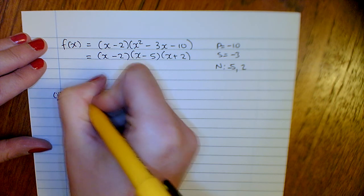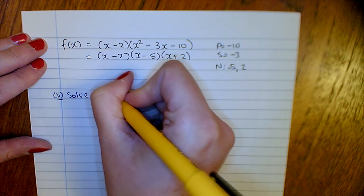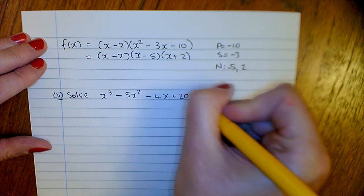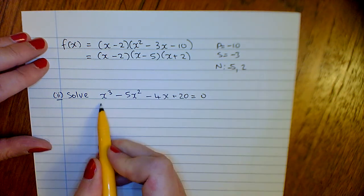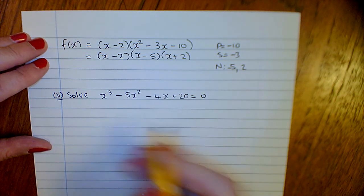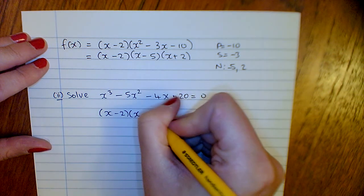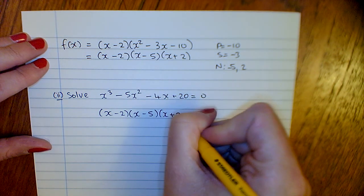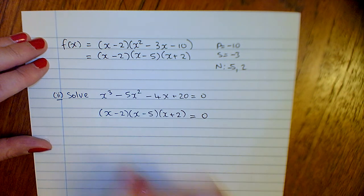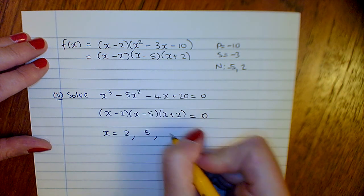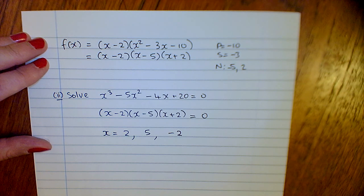Then quite often part two of the question is solve x cubed minus 5x squared minus 4x plus 20 equals 0. So this is the cubic that we've just factorized. We can write it as our three brackets, so either x is 2, 5, or minus 2.